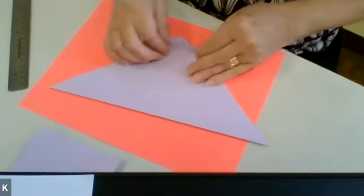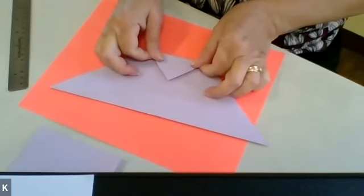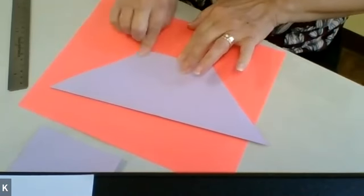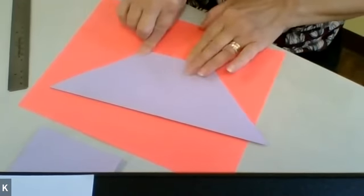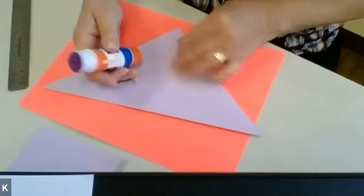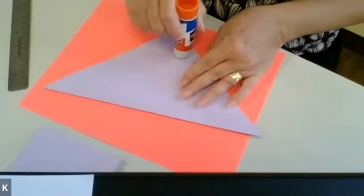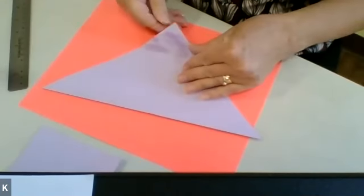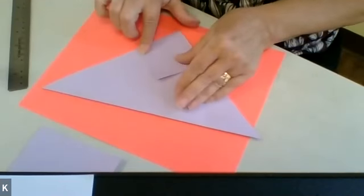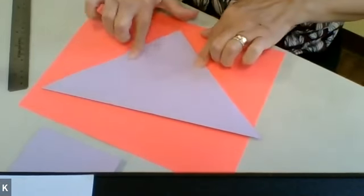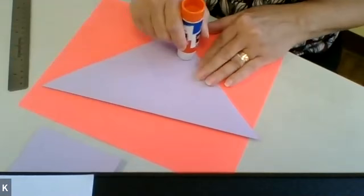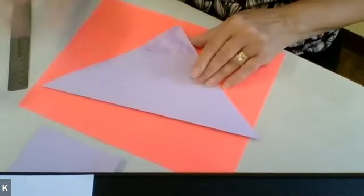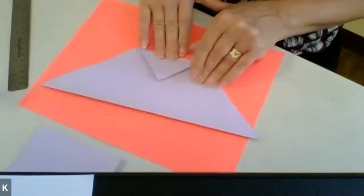And then you're going to take the bottom and fold it up, however much you want, just to make a flat part of the elephant head. To make sure that it stays that way, you're going to put some glue here, glue it down, and then put some glue on the second piece and glue that down.